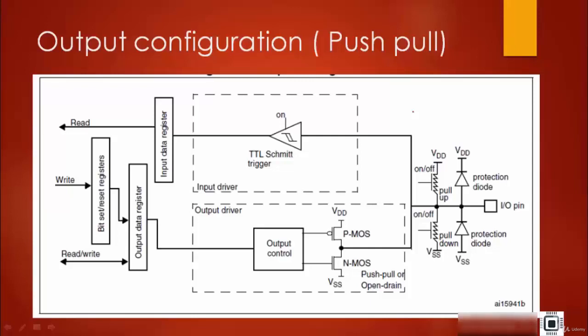Welcome back. In the previous lecture you understood about the open drain output type and push-pull output type of an IO pin. Remember that when the IO pin is in output mode, the input part — this circuit — will not be off; it will also activate, unlike in input mode where the output is deactivated.